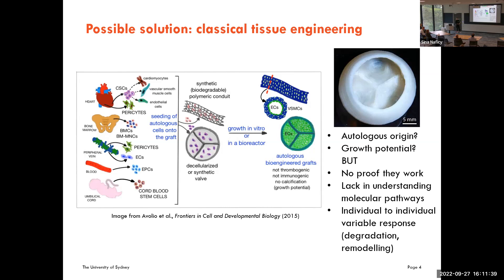The suggested advantages of this living construct are that it can be of autologous origin and has the potential for growth. However, to date there is no proof that these valves work in the long run, largely due to a lack of understanding of molecular pathways associated with neotissue formation, remodeling, and scaffold degradation. There is also individual-to-individual variable response, making it difficult to predict the fate of the valve.